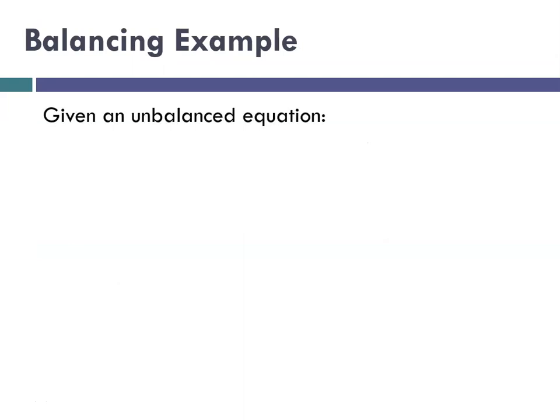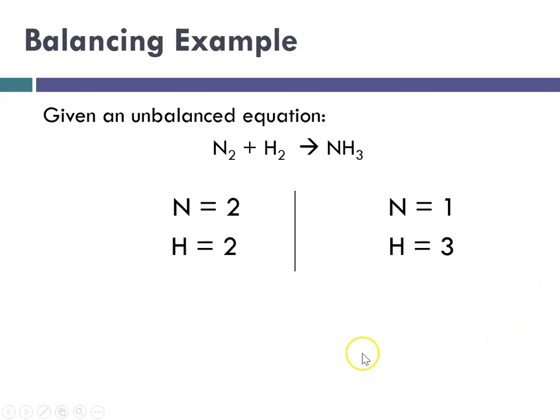So here's my balance example. So given the unbalanced equation nitrogen plus hydrogen react to produce ammonia, I'm going to put in my little line and I'm going to tally. So the nitrogens on the reactant side there are two and on the product side there's one. Hydrogens there's two on the reactant side and three on the product side. So looking at this, inspecting, the easiest way to approach this would be to take this three and put it in front of hydrogen on this side and take this two and put it in front of the compound that has hydrogen on that side.